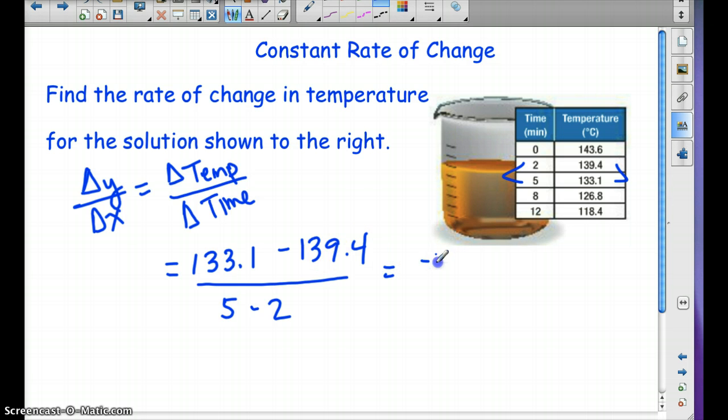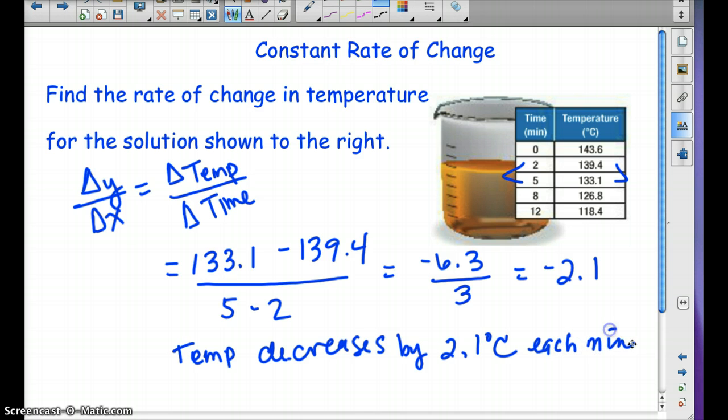So this would be a negative 6.3 over 3, which ends up being a negative 2.1. So what does that mean? It means the rate of change, or the temperature is decreasing, decreases by 2.1 degrees Celsius each minute. So that's what's happening here. And this would be constant rate of change because it's happening each time.